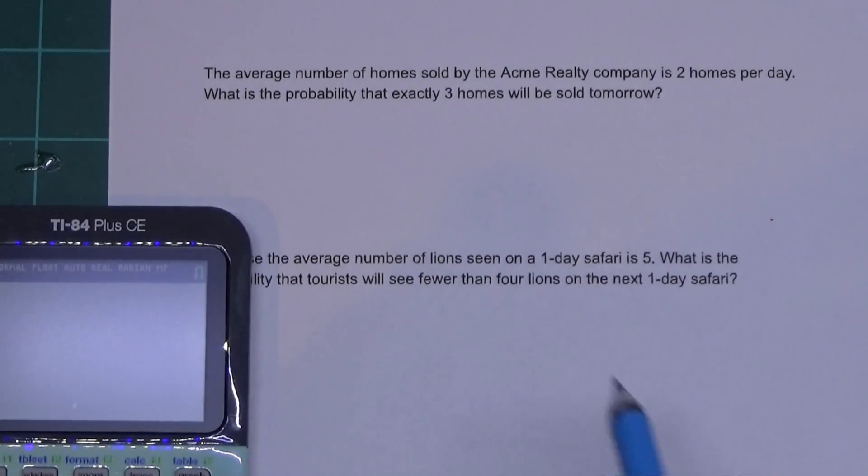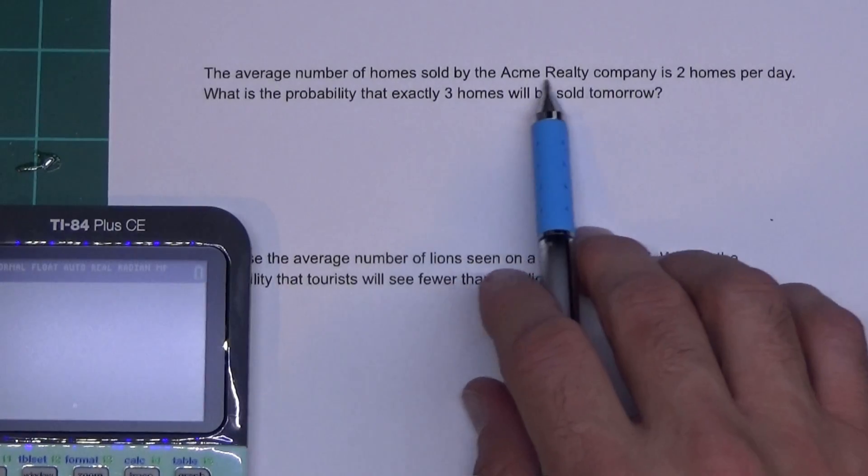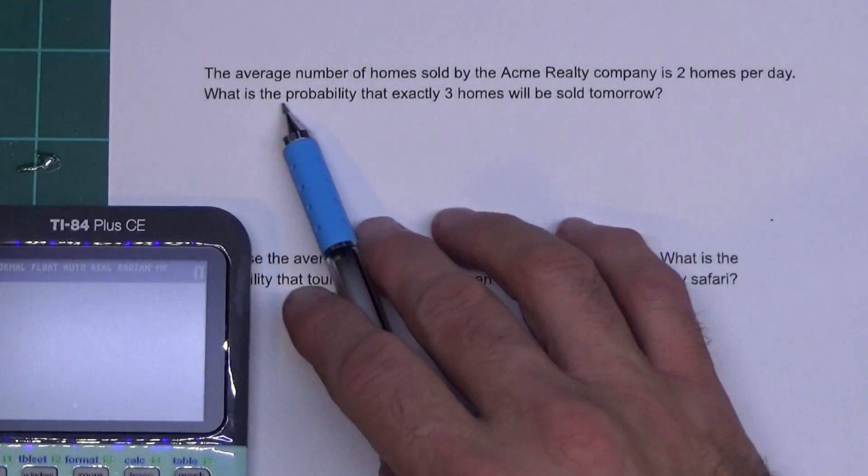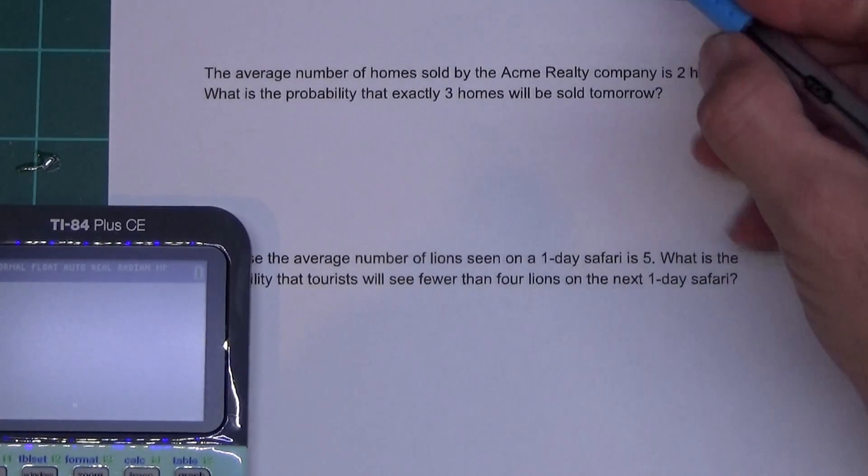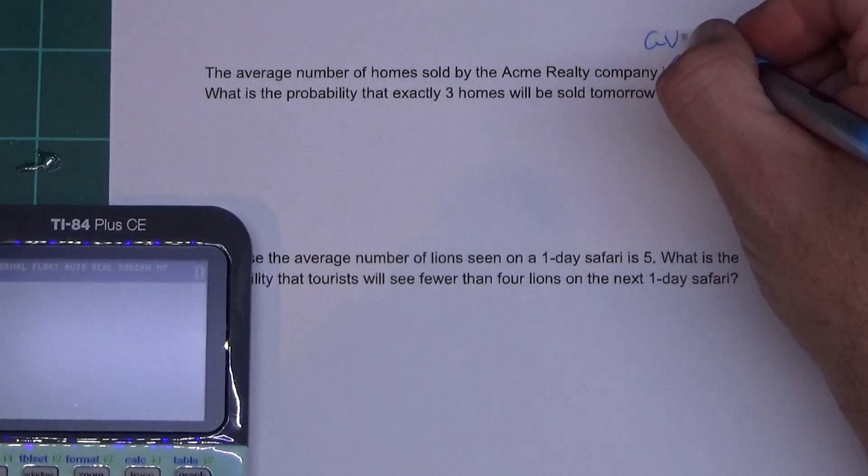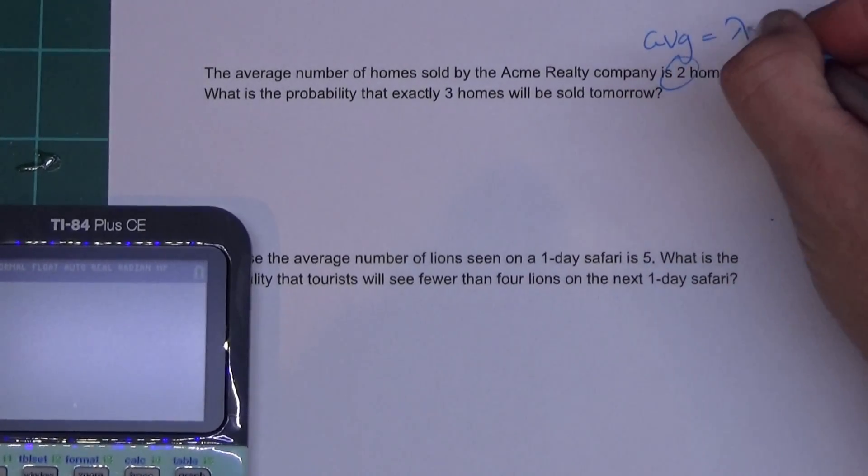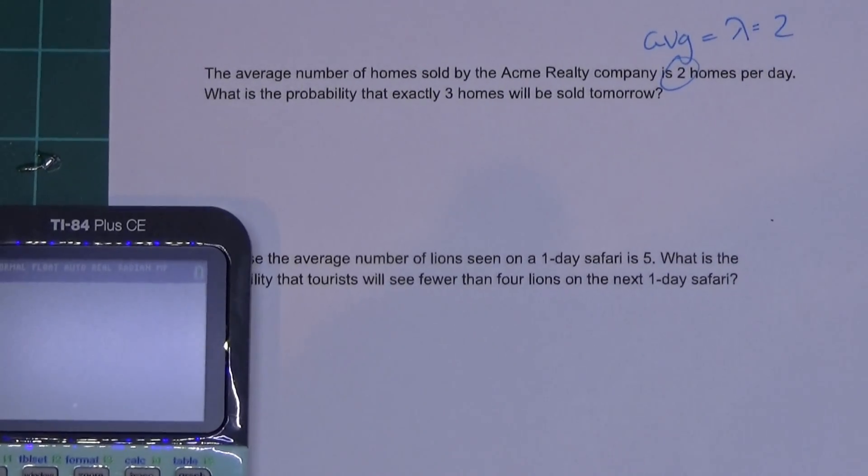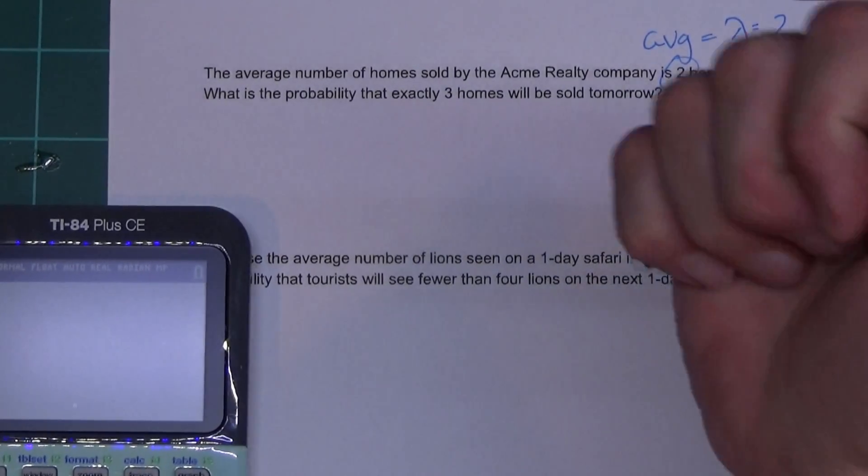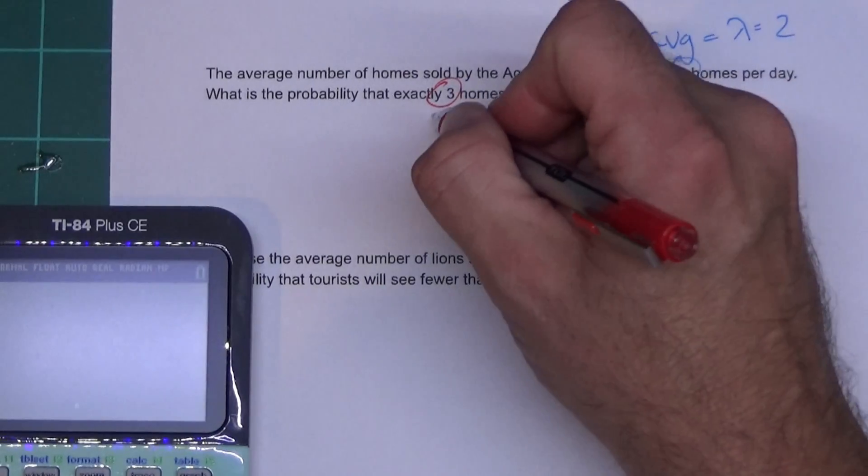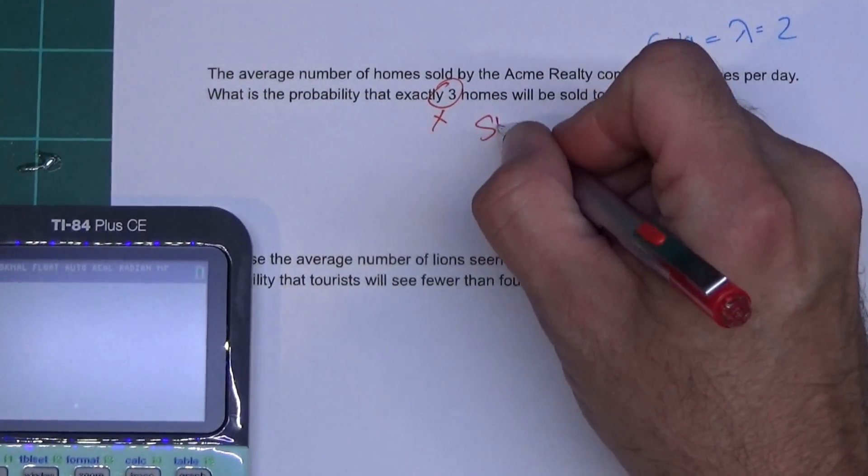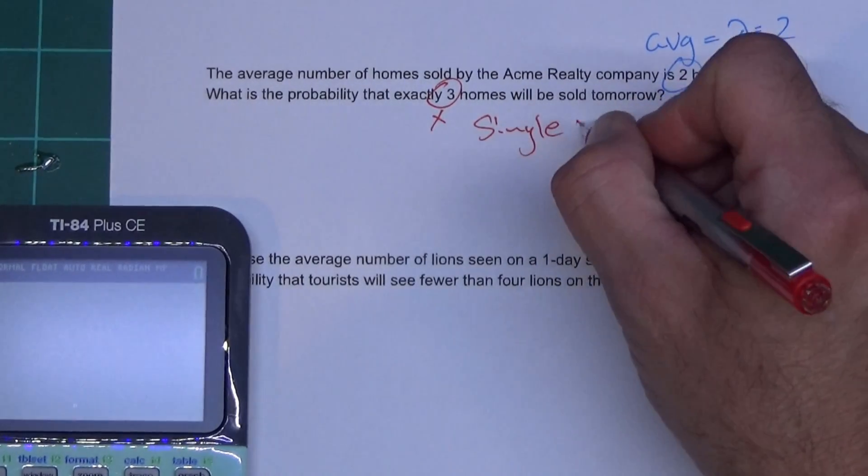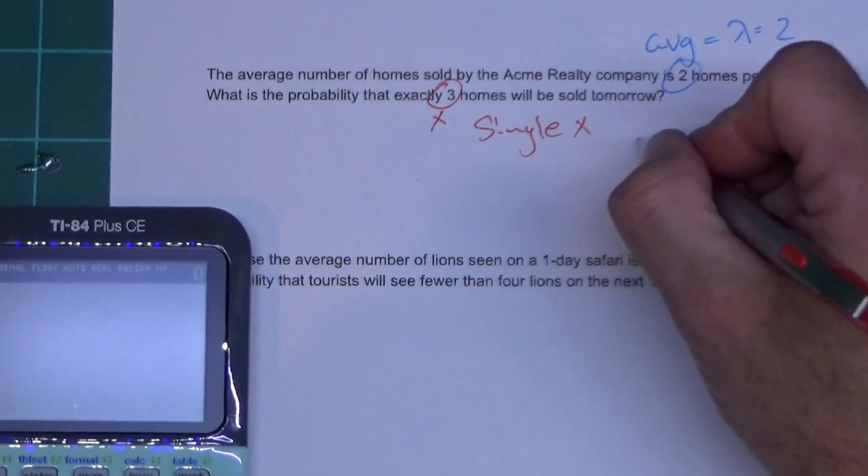Now it says the average number of homes sold by Acme Realty Company is two homes per day. What is the probability that exactly three homes will be sold tomorrow? Right here we have the average - the calculator is going to call that lambda. Right here we have exactly three homes - this is going to be X. Now if there's a single value for X, that means we're going to use Poisson's PDF.